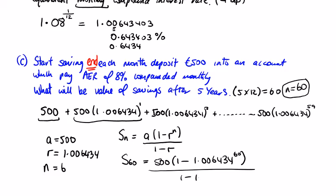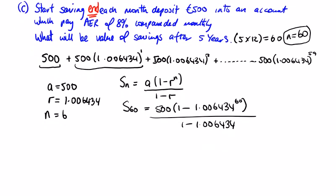And typing this into our calculator, I'd always recommend typing it in twice just in case. So the first time we're getting £36,472.29. I'll just double check that. So we can confirm this is the answer. Always check it twice.